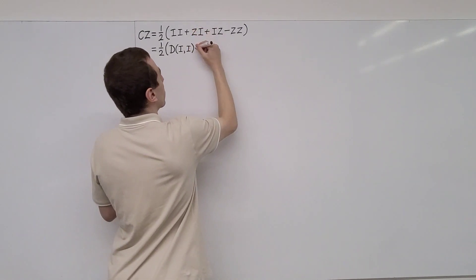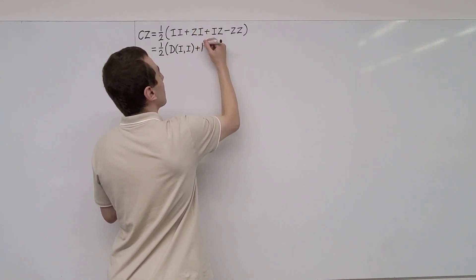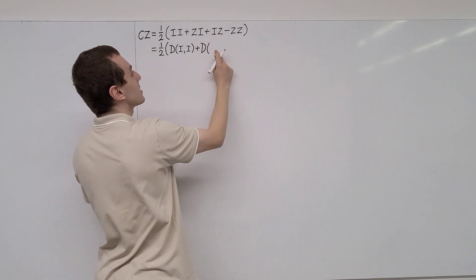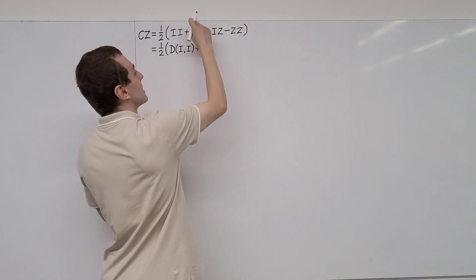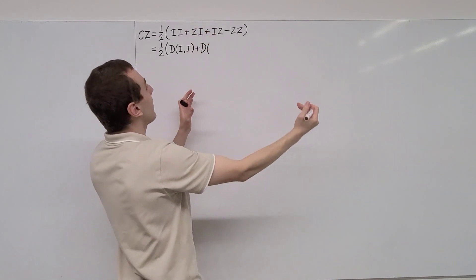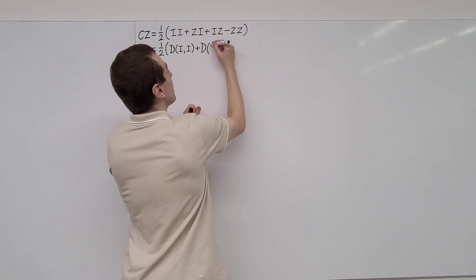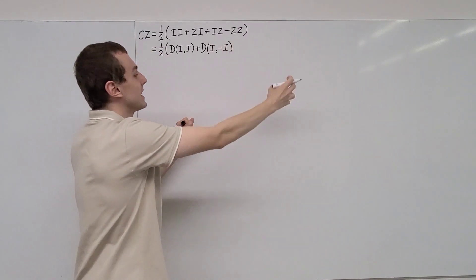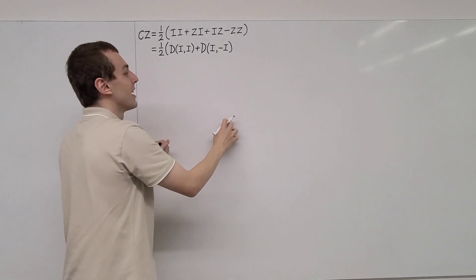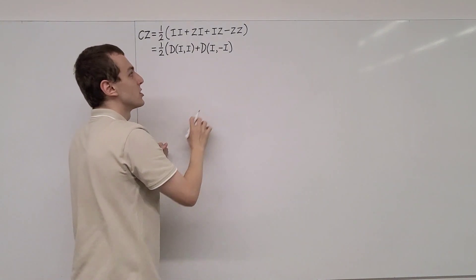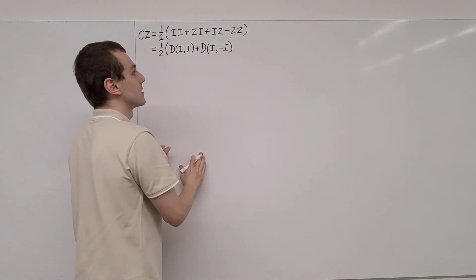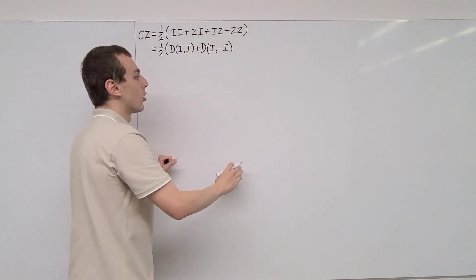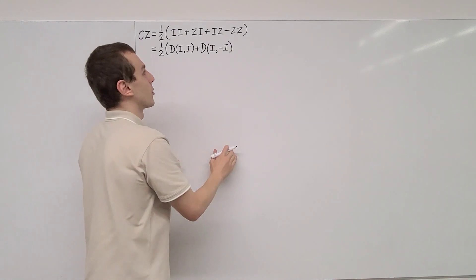For the ZI term, we're going to have another diagonal matrix. The entries of this diagonal matrix are going to have the Z with an I inserted inside of it, so it's going to be I, minus I. This is what happens if we insert the identity inside the Pauli Z. The off-diagonal terms are 0, so they're just going to give 0 contributions — we're only getting terms along the diagonal.